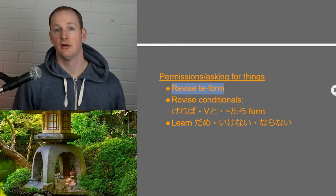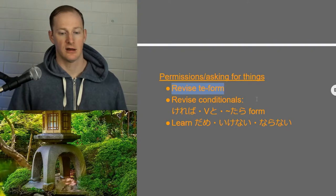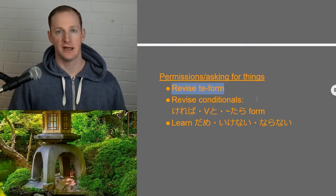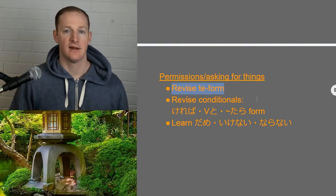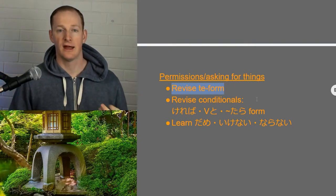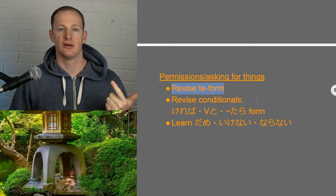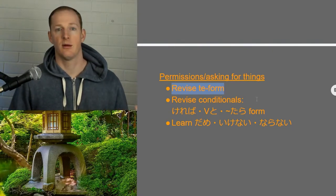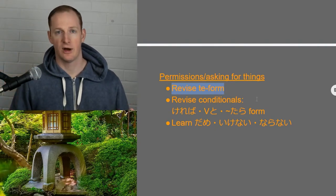We also want to be able to do the negative TE forms as well. The negative ones are pretty easy because all the negatives end in AI — so じゃない, kunai, and nai for our verbs. Then we remove that last I and put kute. So ja nakute, oishikunakute, and tabenakute, just as examples of three. So the negatives are quite straightforward to remember.